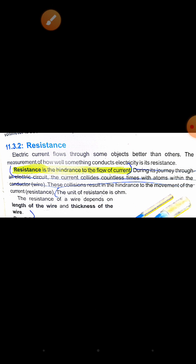The unit of resistance is ohm. The resistance of a wire depends upon the length of the wire - the longer the length, the greater the hindrance - and the thickness of the wire. If the wire's thickness is more, then the resistance is less.